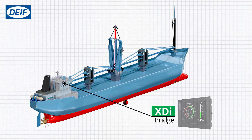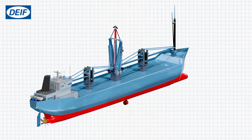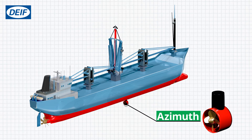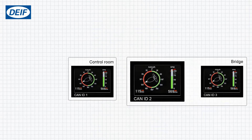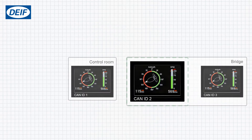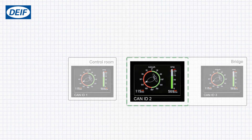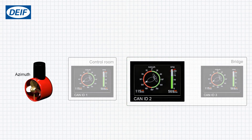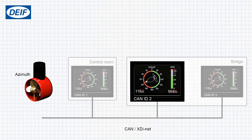Let's see how to set up an XDI multi using the standard azimuth library. In this example, the ship has one azimuth thruster and the XDI will be installed on the bridge. The XDIs will show both the azimuth angle and RPM. The XDIs are connected together with CAN bus using XDInet to share data.